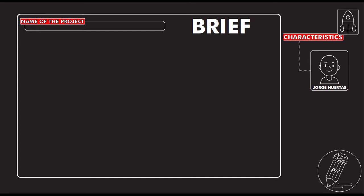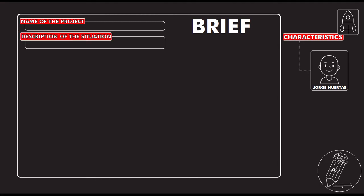The first thing is that you have to put the name of the project. Perhaps it doesn't have a clear name yet, but you can make a suggestion if it's not done. Then describe the situation — put in context how this development is coming from and what context all the people involved in the project know.